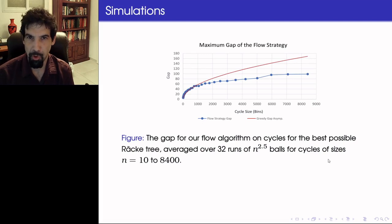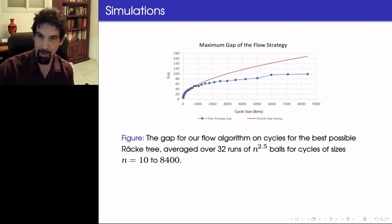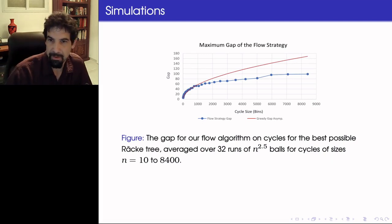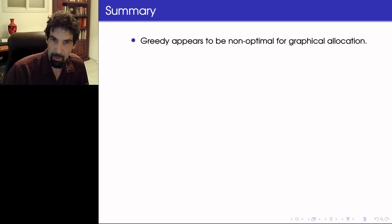Let me conclude by showing you a simulation. So here the red line represents the greedy strategy maximum gap. The blue one is the gap obtained by our strategy. And you can see that indeed it offers an improvement and nearly flattens out as the cycle size grows.